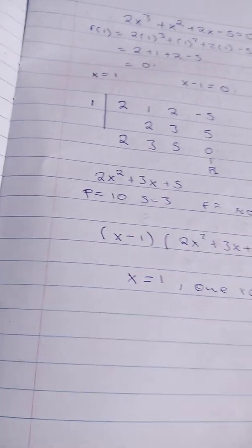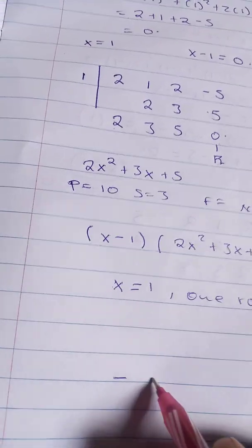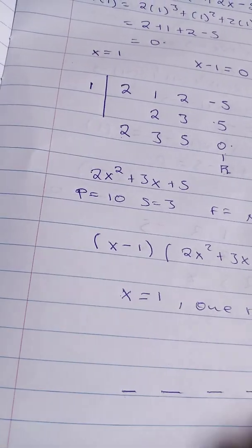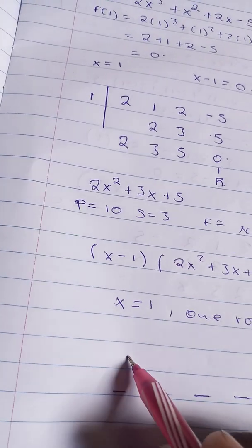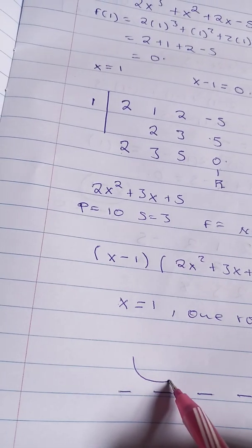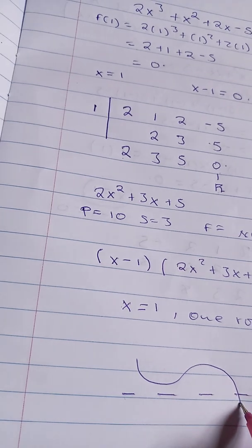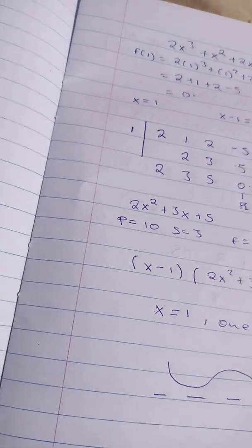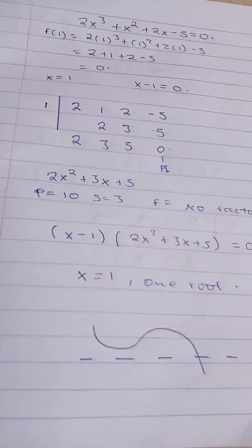What that means is it only cuts the x-axis at one point. There are some functions that are like this, just move like this, then only at one point. That's the kind of function that we are talking about in this example.